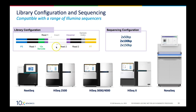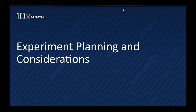The sequencing library contains reads with P5 and P7 handles for the Illumina sequencer, read one and read two, and at the beginning of read one, a 16-base 10x barcode that allows you to assemble every read from the same cell. To sequence single-cell DNA libraries, we recommend a configuration of 2×100 bases. However, you can go lower with 2×50 bases, or longer if you're interested in more genomic context. The libraries are compatible with all tested Illumina sequencers.